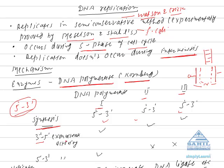Next is 3'-5' exonuclease activity. Suppose this is the parental strand with polarity 5'-3', and the new strand is formed in the 5'-3' direction according to base-pairing rules — adenine pairs with thymine, and guanine pairs with cytosine. Suppose due to some error, instead of cytosine, thymine is added at a position. This error is soon sensed by the DNA polymerase enzyme.